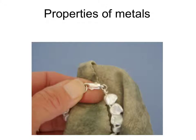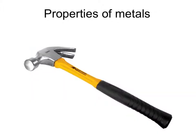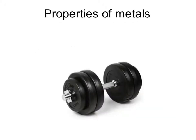Let's illustrate some of those properties. This necklace is made of silver because it's lustrous — it's very shiny. This hammer is made out of high tensile steel because it's very hard, meaning the end hitting the nail will not change its shape. These weights are made out of a metal because the metal has a high density, so the weights are quite small and still have a high mass.